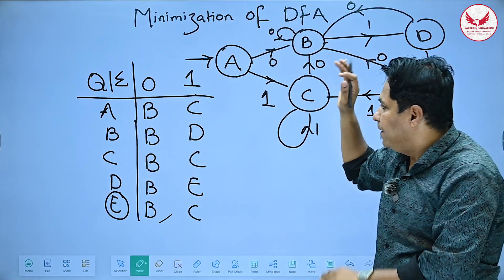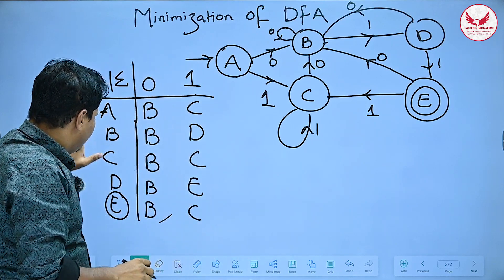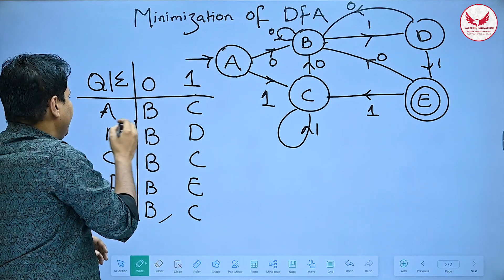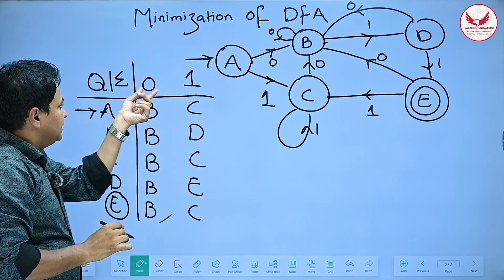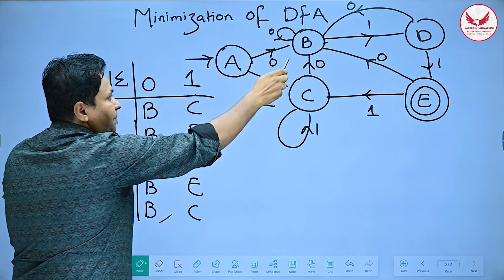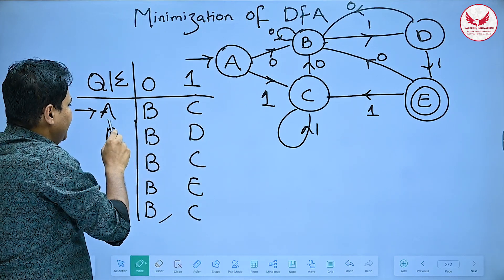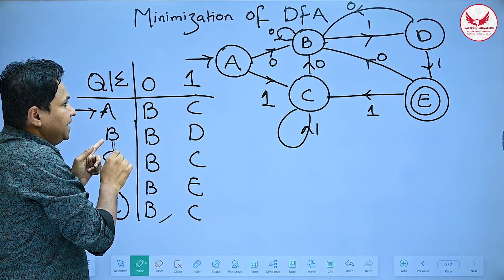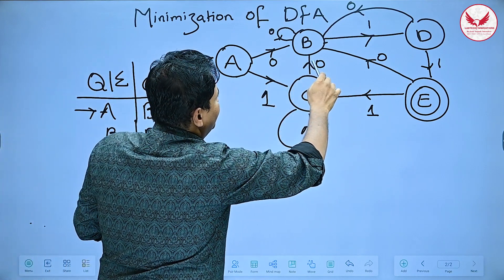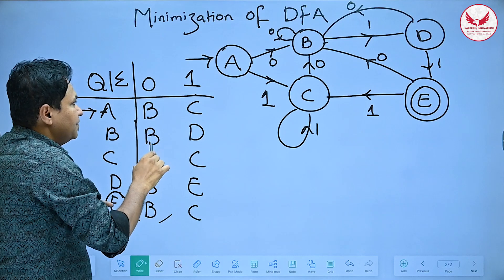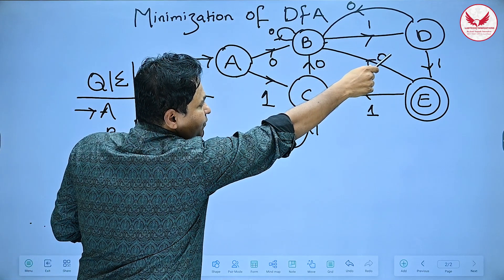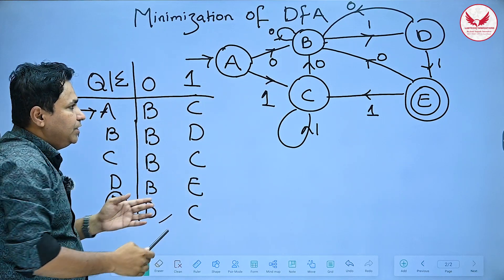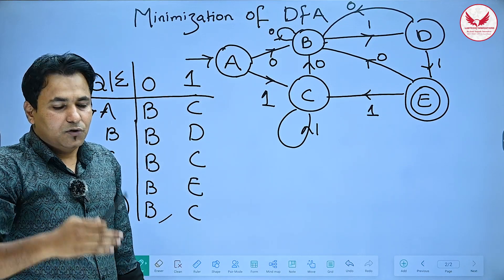The first important step is to draw a transition table for this transition diagram. The transition table has five states total, where E is the final state and A is the initial state. In state A, processing 0 reaches B, processing 1 reaches C. In state B, processing 0 is a self-loop, and processing 1 reaches state D.